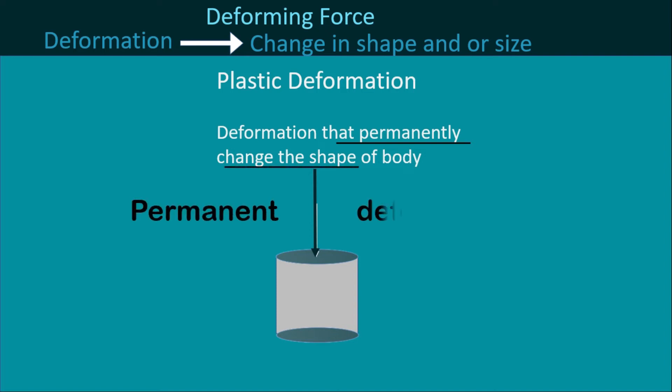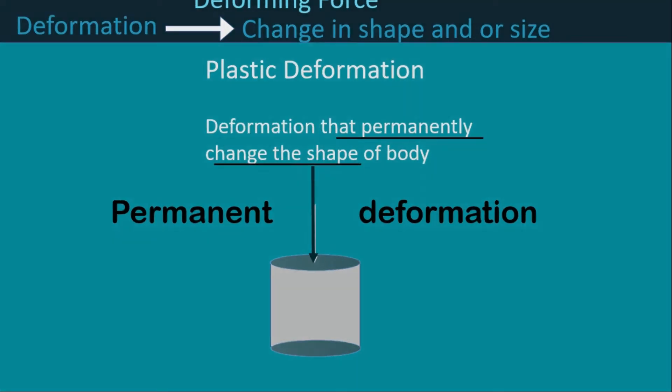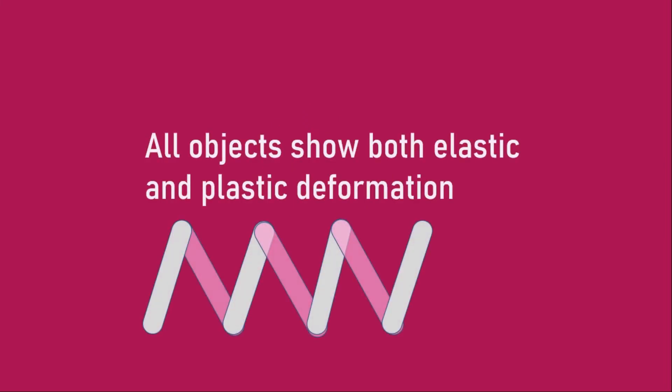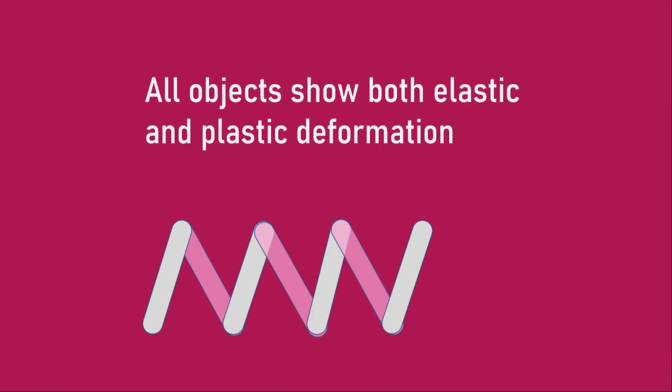Plastic deformation permanently changes the shape of the body. All objects show both elastic and plastic deformation. Initially an object shows elastic deformation, but as we keep increasing the deforming force, a moment comes when the body becomes permanently deformed and cannot be brought back to its initial position. That type of deformation is plastic deformation. Plastic deformation cannot be reversed when the external force is removed.